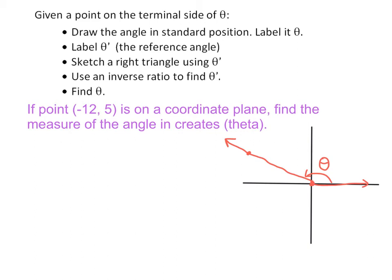To do so, we label theta prime — the angle created by the terminal side and the nearest x-axis, which is right here. We create a right triangle by dropping this point down. The length of the horizontal side is 12 (we went left 12, so the length is positive 12), and we went up 5 to reach the point, so those sides are 5 and 12.